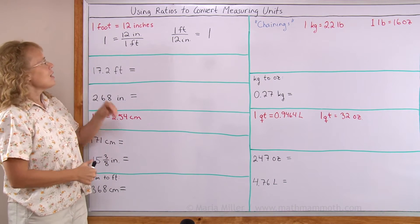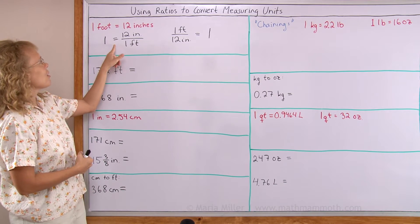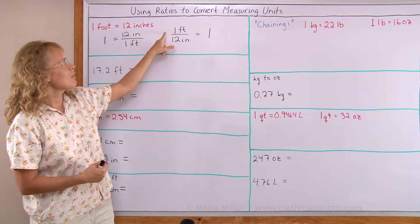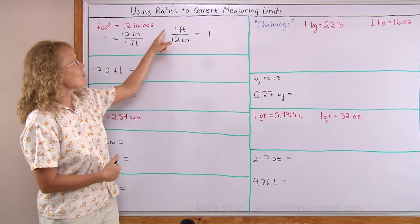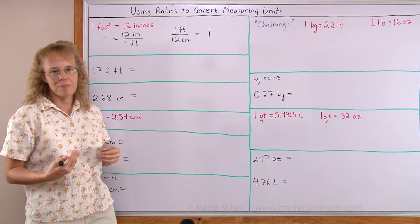So that is why some people call it a special number one. Because one is now written as 12 inches divided by one foot, or one is written as one foot divided by 12 inches. But you can also think of it as a ratio of one foot to 12 inches, or 12 inches to one foot.